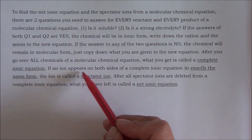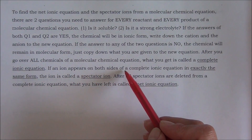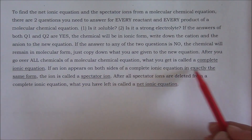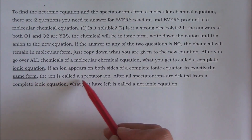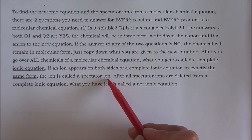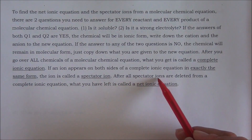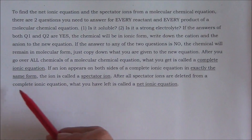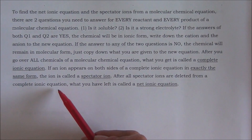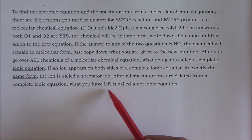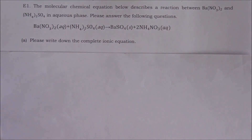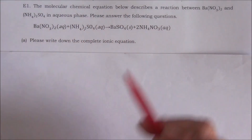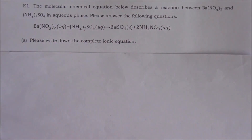If an ion appears on both sides of a complete ion equation in exactly the same form, the ion is called a spectator ion. After all spectator ions are deleted from a complete ion equation, what you have left is called a net ion equation. This equation is called a molecular chemical equation because all chemicals appear in molecular forms.